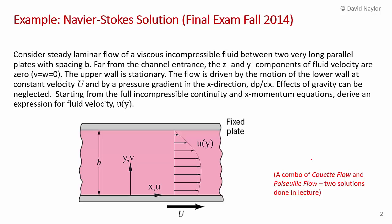The problem states: consider steady laminar flow of a viscous incompressible fluid between two very long parallel plates with spacing B. Far from the channel entrance, the z and y components of the fluid velocity are zero — so V and W are zero. The upper wall is fixed and stationary, but the flow is driven by the motion of the lower wall moving at velocity U, and also by a pressure gradient dp/dx in the x-direction.